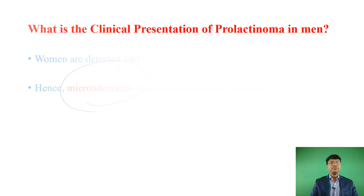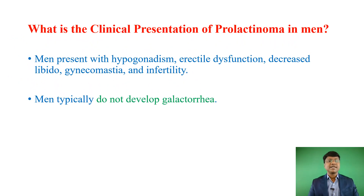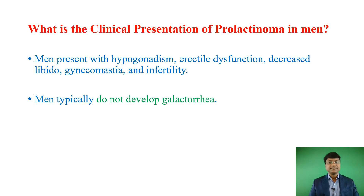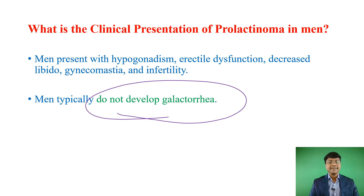What is the clinical presentation of prolactinoma in men? Men present with hypogonadism, erectile dysfunction, decreased libido, gynecomastia, and infertility. Importantly, men typically do not develop galacturia — unlike females. So men present with hypogonadism, erectile dysfunction, decreased libido, gynecomastia, and infertility.